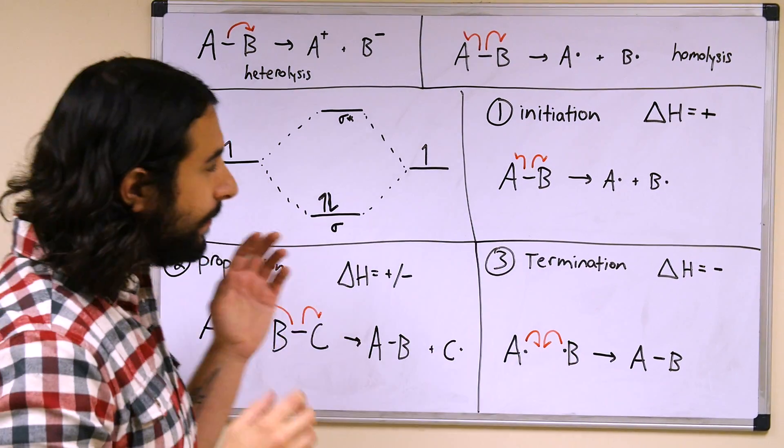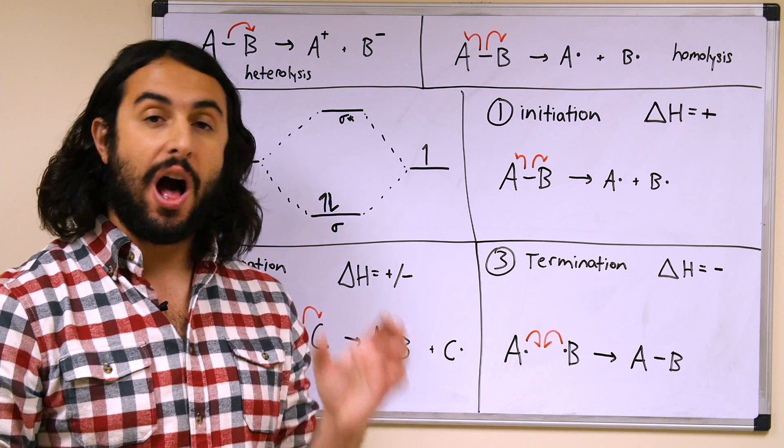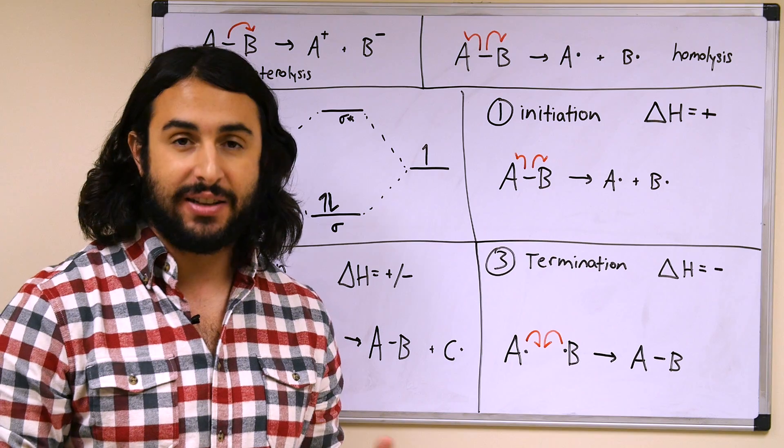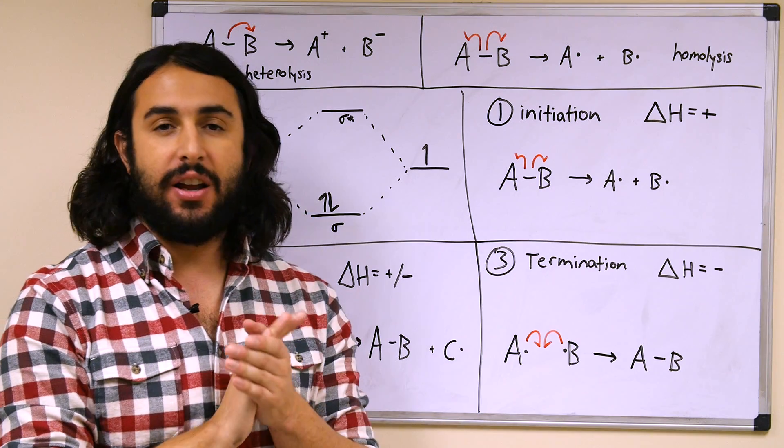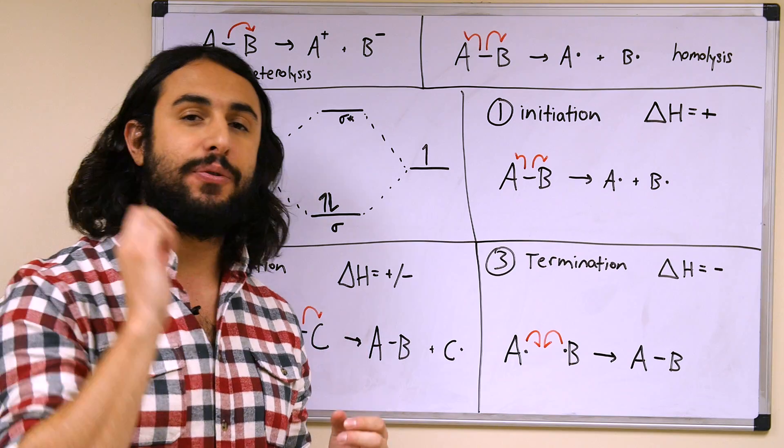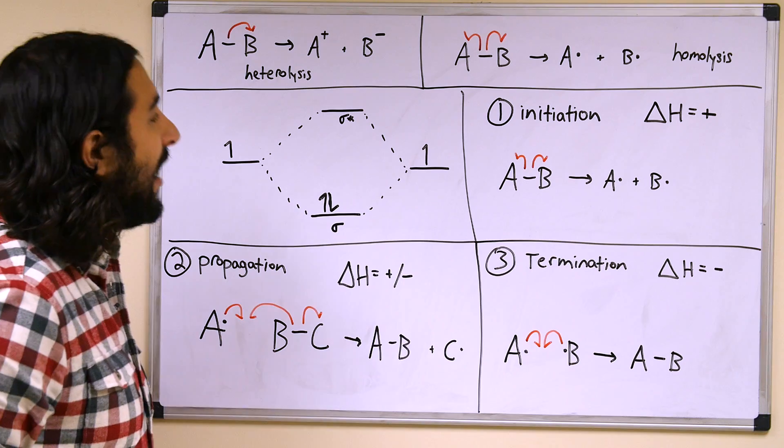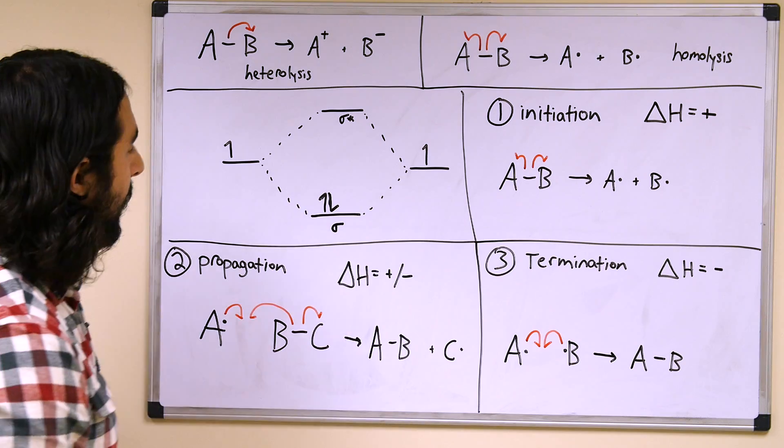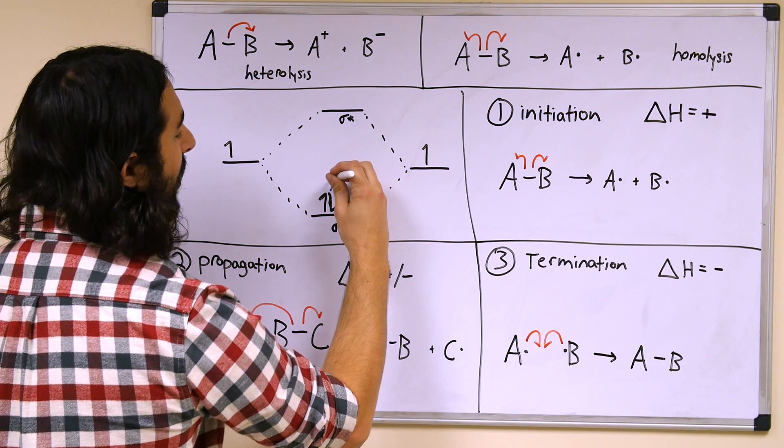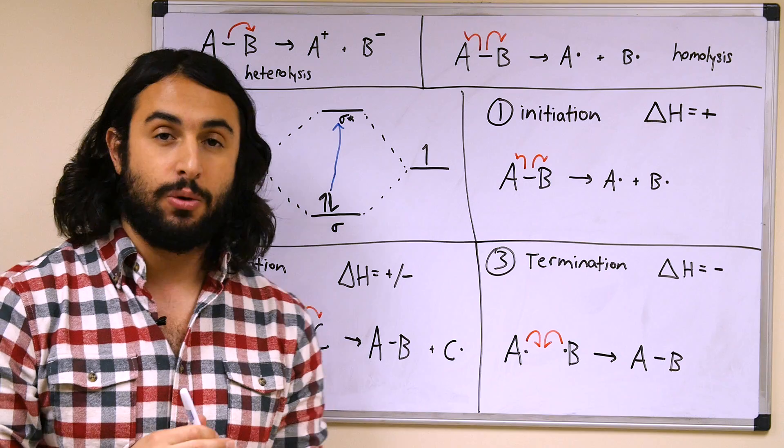And there are certain things that can promote homolysis, so we would wonder why are we seeing this, what is it that would promote this? Well, as it happens, there are certain kinds of covalent bonds—for example, oxygen-oxygen covalent bonds and halogen-halogen covalent bonds—that if that bond is heated or struck with a photon, a very specific energy, usually UV light, that will actually promote homolysis.